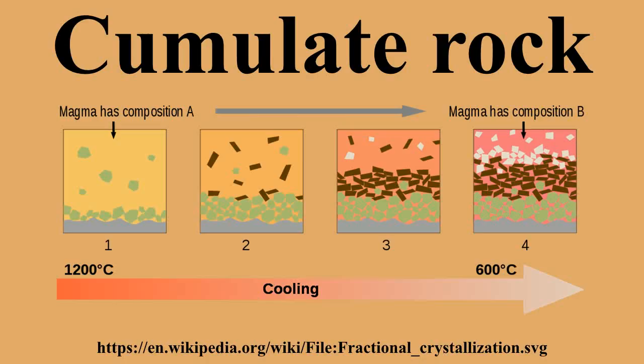When oxide minerals exceed 90% of the bulk of the interval, the rock may be classified according to the oxide mineral — for example, magnetitite, ilmenitite or chromitite. Strictly speaking, these would be magnetite orthocumulate, ilmenite orthocumulate, and chromite orthocumulates.